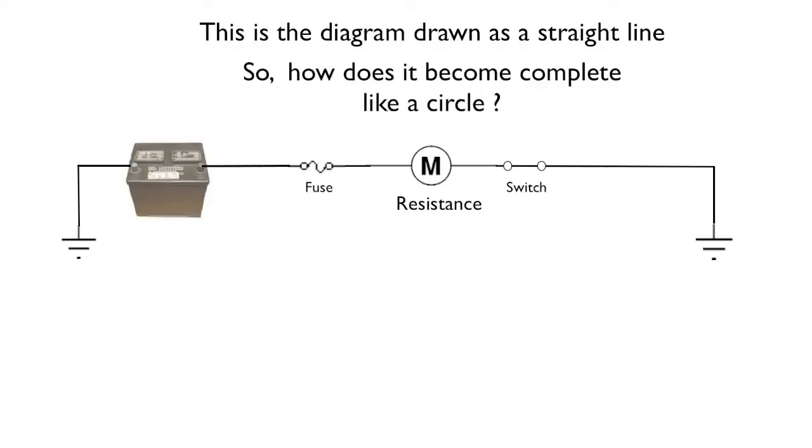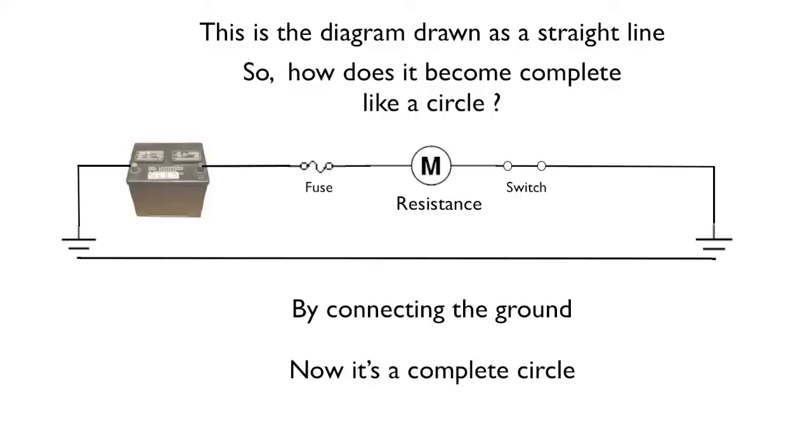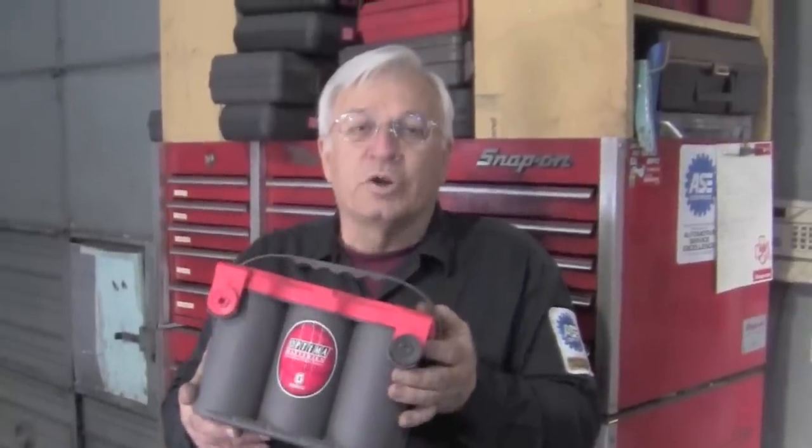Well, you know the battery is always going to attach to the frame, or the engine, or both. And then the rest of your circle will attach to the frame, or perhaps the PCM ground. But somehow, it'll connect back to ground. Now let's look at the battery.